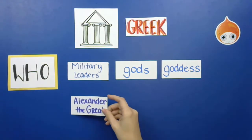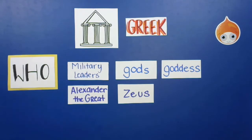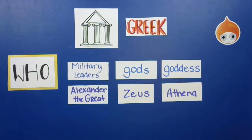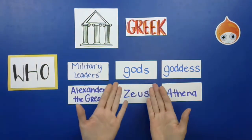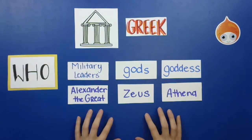A couple of examples would be Alexander the Great — he was a very famous military leader. The god Zeus was the father of all gods. And Athena was the goddess of war. So when I ask you these questions, I'd ask: who were the three types of people important to the Greeks? And you would say military leaders, gods, and goddesses. I'd ask for an example of a military leader, and you'd say Alexander the Great. For a Greek god, you'd say Zeus. Remember, there are many military leaders, gods, and goddesses, but these are the three I'm looking for.